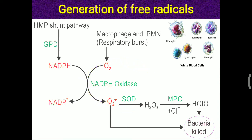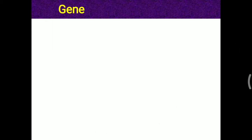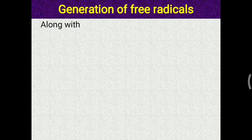For the activity of NADPH oxidase, apart from oxygen, NADPH is needed. This NADPH is provided from the HMP shunt pathway. The key enzyme of the HMP shunt pathway that produces NADPH is G6PD — glucose-6-phosphate dehydrogenase. This shows the correlation with carbohydrate metabolism, specifically the HMP shunt, a minor pathway of carbohydrate metabolism.